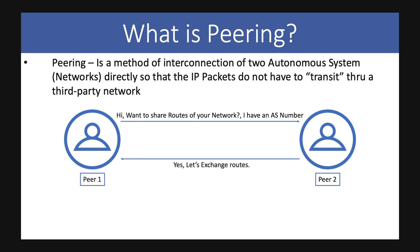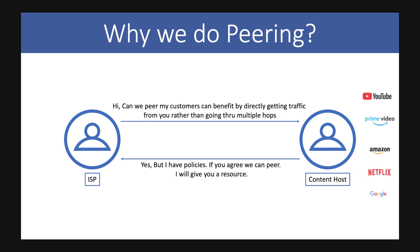There is nothing known as peering bandwidth, but there is peering — it is an interconnection of two autonomous systems where IP packets don't have to go through a transit router. So if I need to reach Google, YouTube, or Netflix, I don't have to go through my TSP; I can go to them directly. We also do peering with Airtel, Vodafone, or other TSPs. How does peering happen? Both sides need an AS number; we request the other side to peer, and if they agree, we exchange routes.